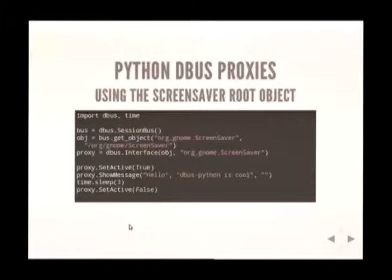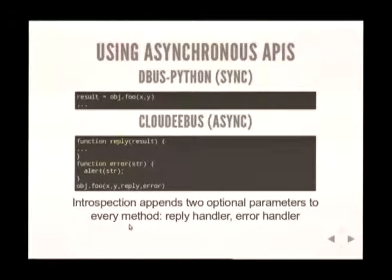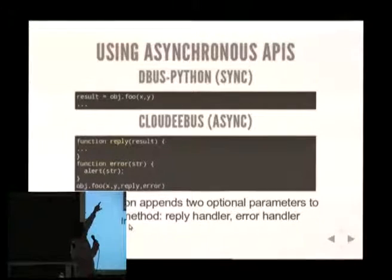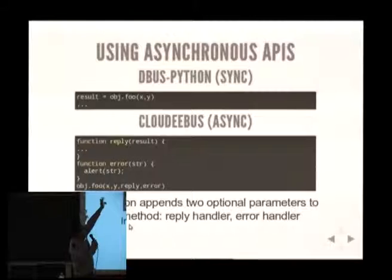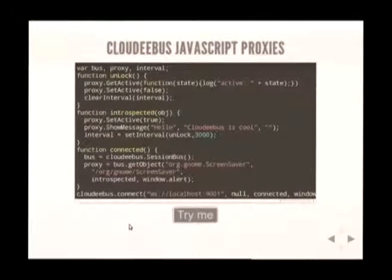Now if you want to do the same thing in JavaScript, the big difference is that JavaScript is asynchronous. Instead of calling method foo with parameters x and y and getting a result directly, you call method foo and pass a couple of handler functions — one for the result and one in case of error. In the reply handler you get the result. So instead of obj.foo(x, y), you do obj.foo(x, y, replyHandler, errorHandler) — same thing but asynchronous.